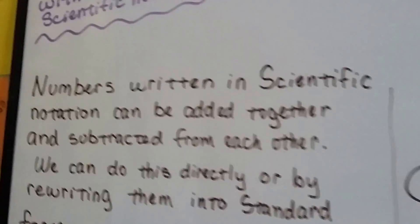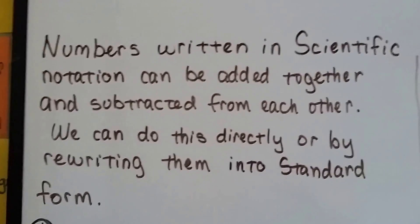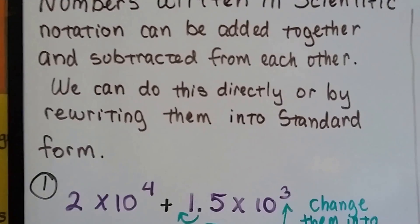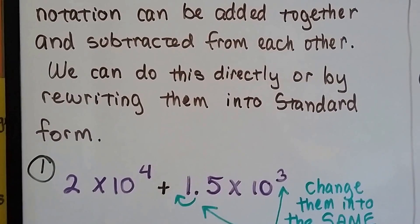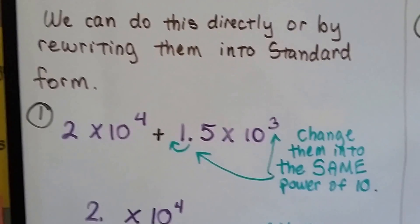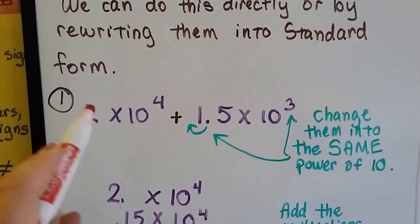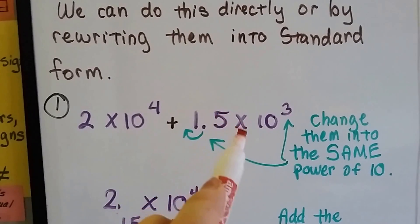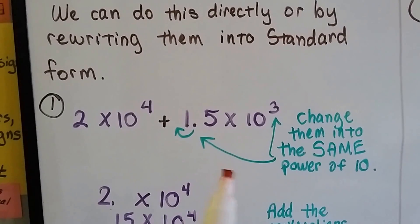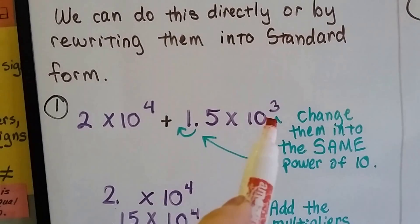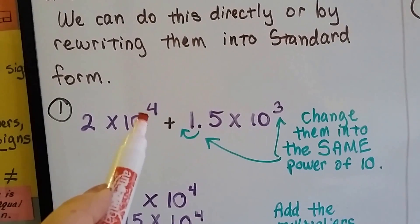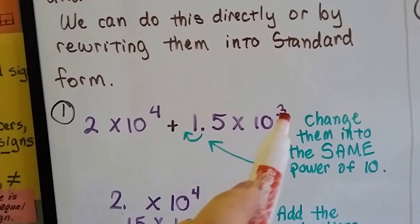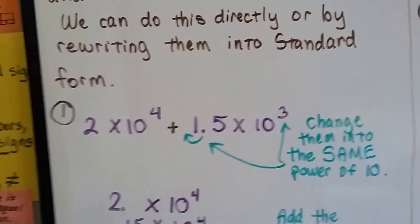Numbers written in scientific notation can be added together and subtracted from each other, and we can do this directly or by rewriting them into standard form. Remember, standard form is the regular way we write numbers. So the first way we do it is, if we have 2 times 10 to the 4th power and we're going to add it to 1.5 times 10 to the 3rd power, the first thing we need to do is change them into the same power of 10.